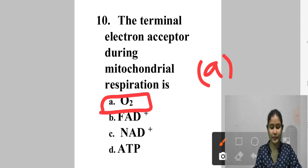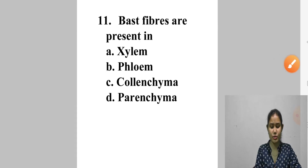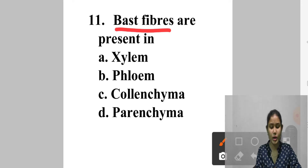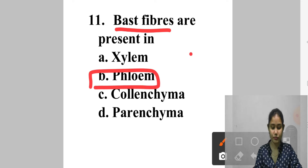Question 11: Bast fibers are present in — Xylem, Phloem, Collenchyma, or Parenchyma? Bast fibers are soft woody fibers obtained from the stems of dicotyledonous plants. They are present in the phloem. Answer is option B.